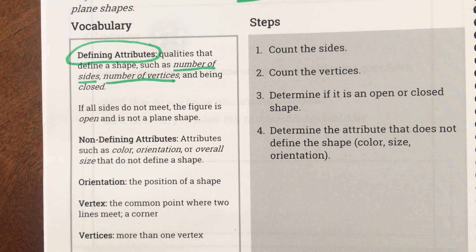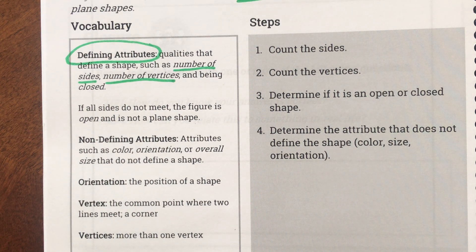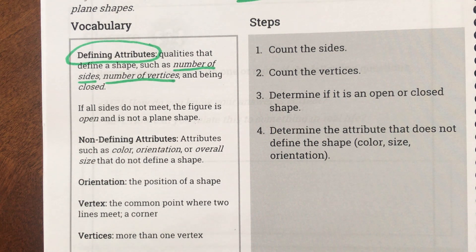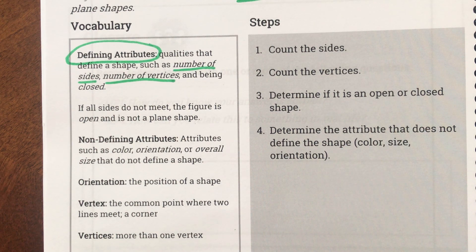If I told you that a shape had three sides and three vertices, you might be able to guess what shape I'm talking about — you might figure out that Miss Munoz is talking about a triangle! If I told you the shape has zero sides and zero vertices, would you be able to define what shape I'm talking about? A circle! That's why those are called defining attributes — because they help us figure out the name of the shape.